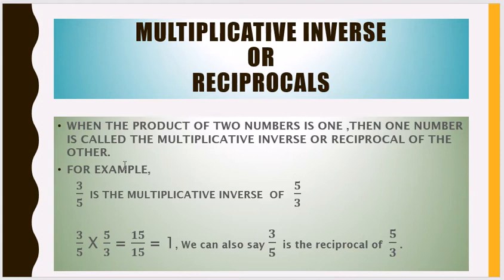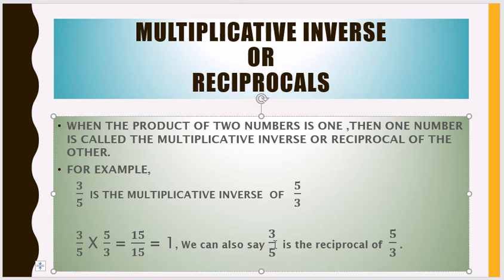For example, 3 by 5 is the multiplicative inverse of 5 by 3. 3 by 5 into 5 by 3 is equal to 15 by 15, which is equal to 1. So the product of 3 by 5 and 5 by 3 is equal to 1. That is why 3 by 5 is the multiplicative inverse, or reciprocal, of 5 by 3.